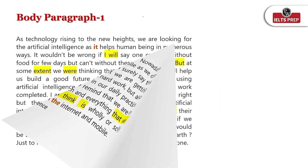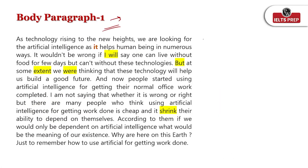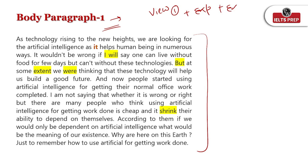Talking about body paragraph one, you are supposed to present view one with explanation and example — those are the three steps to follow. But the student has written 'The technology rising to the new heights, the technology is helping' — the verb is missing. He then wrote 'we are looking for the artificial intelligence as it helps human being in numeric way' — the pronoun 'it' was also missing, which I had to add myself.